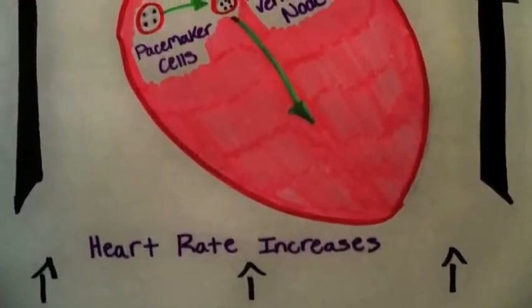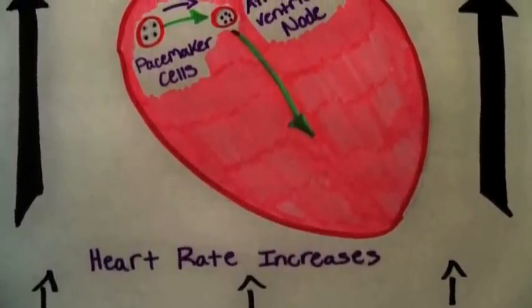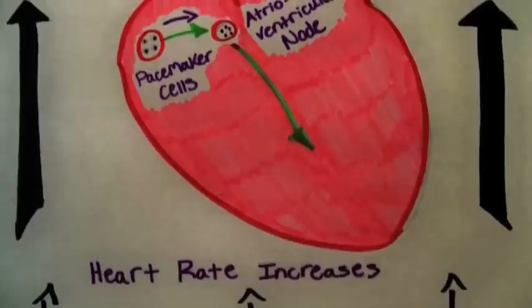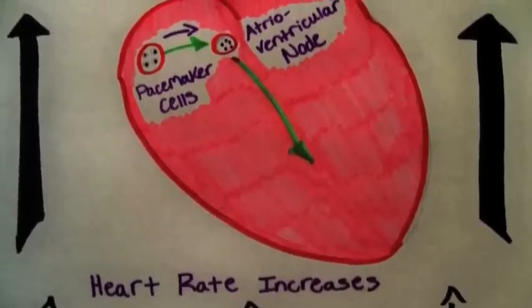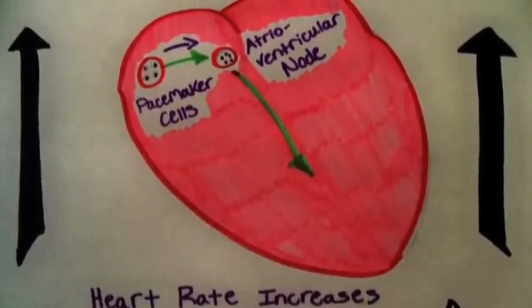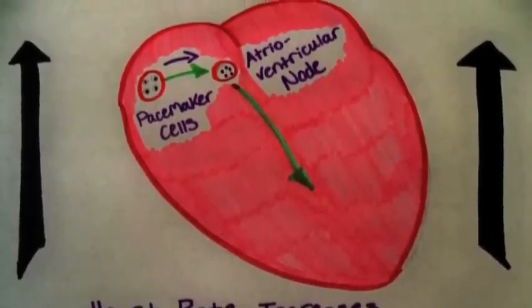As a result, the sinoatrial node, which contains pacemaker cells that determine the heartbeat, sends electrical signals quicker to the atrioventricular node. And because of all this, the heart rate is able to increase.